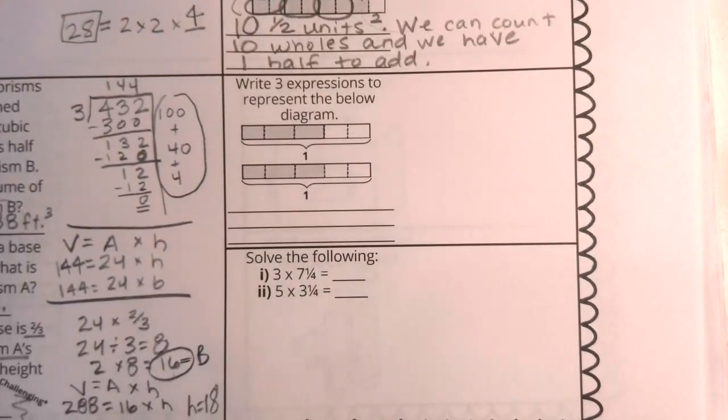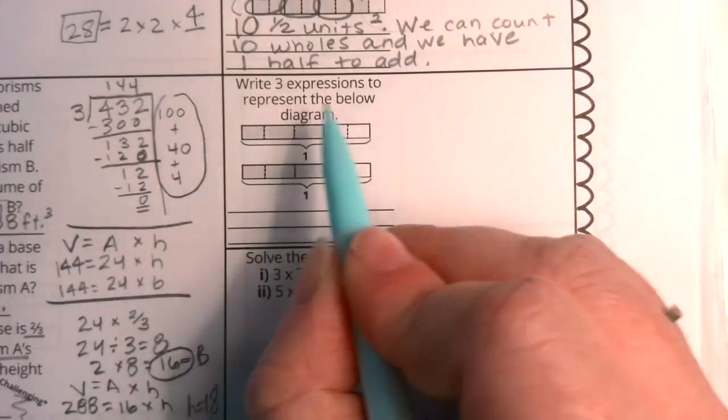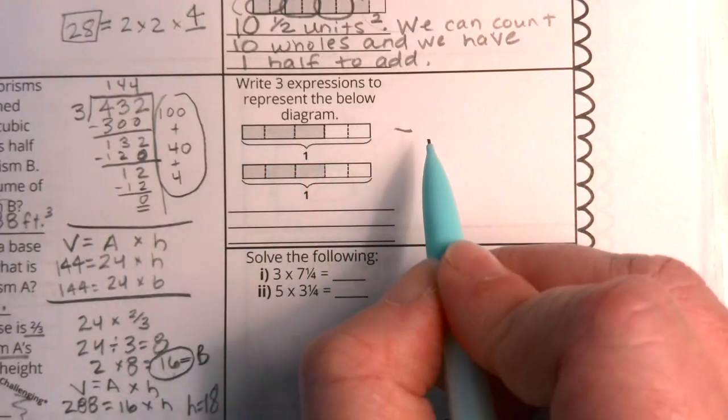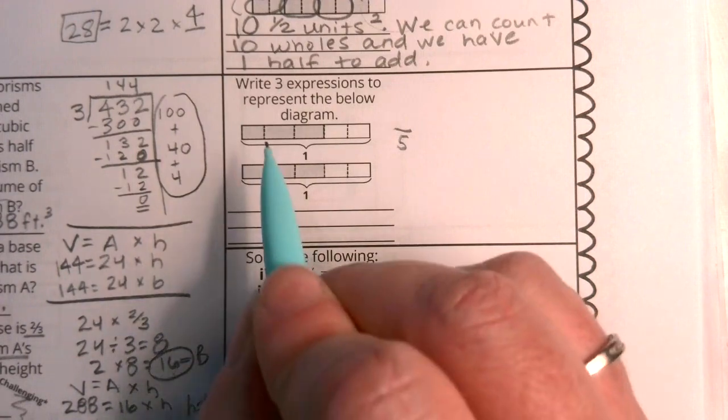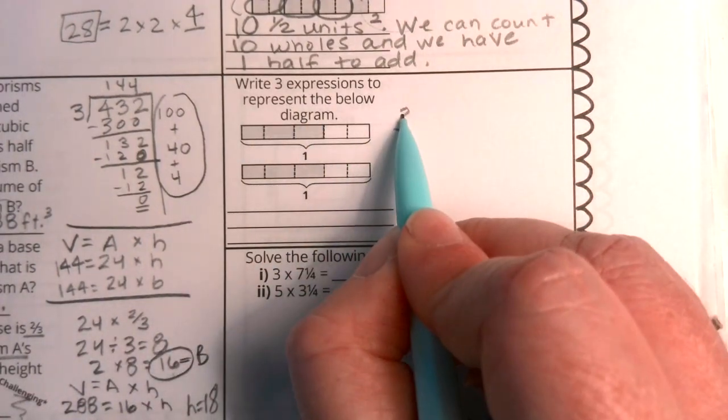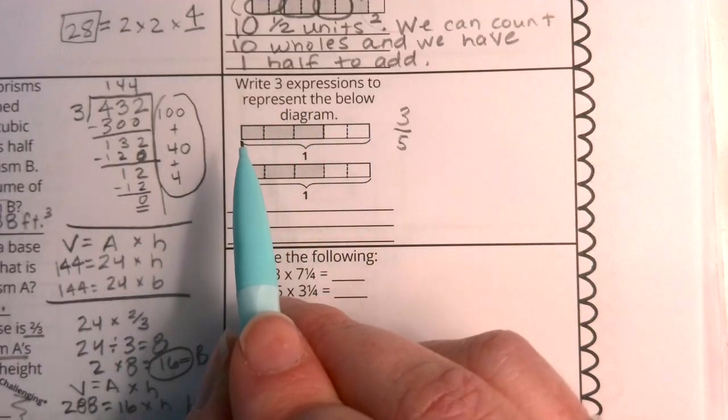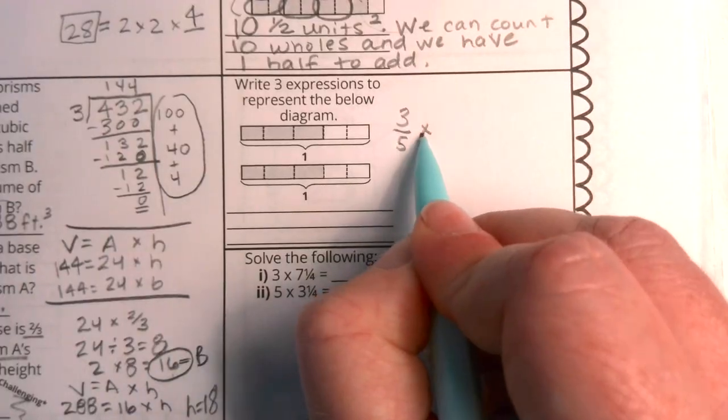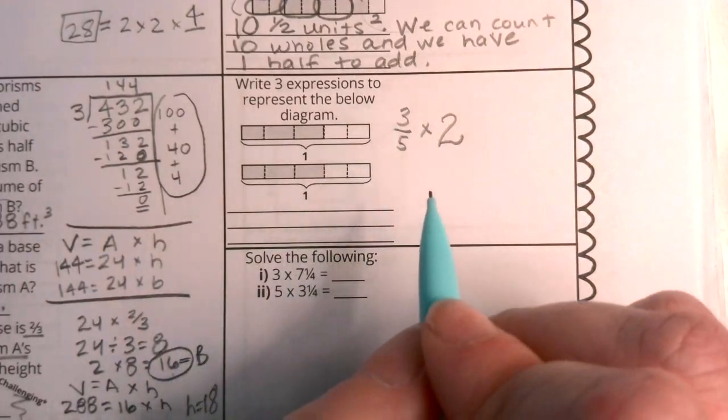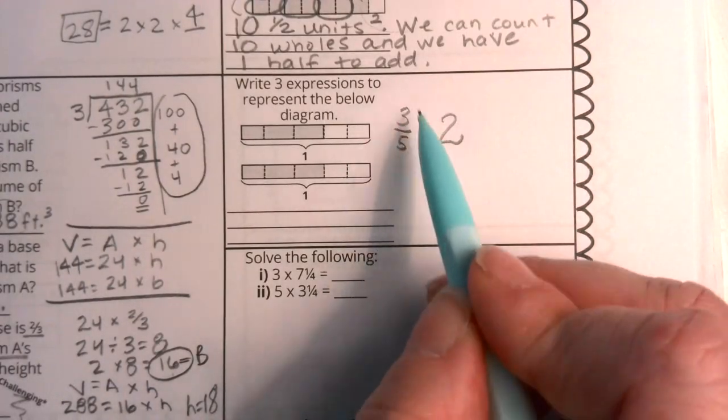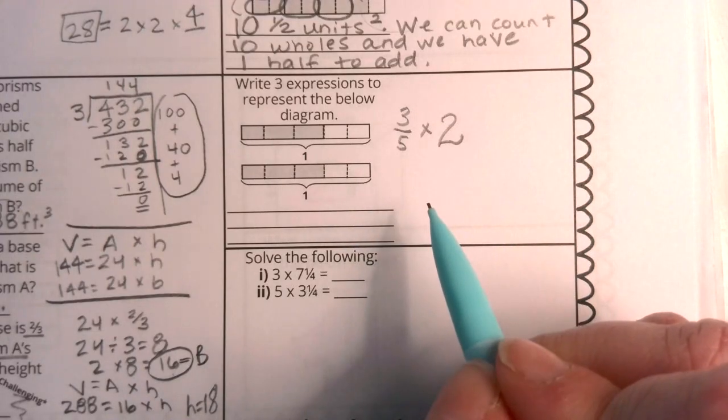Let's go to our tape diagram. Write three expressions to represent the diagram below. Well, I'm going to start with asking myself what fraction is shown in one tape diagram. Well, we know that the denominator is how many parts my whole is broken into. My whole is broken into five parts. How many of those parts do I have that are shaded? Well, three of them. So, this particular tape diagram shows me three-fifths. So does this one. So, we actually have two times three-fifths. There's one way that we could show this.